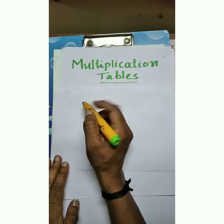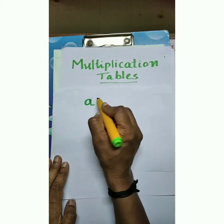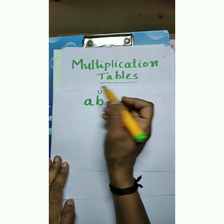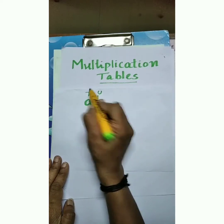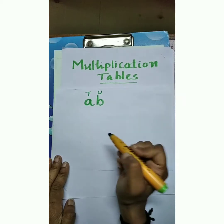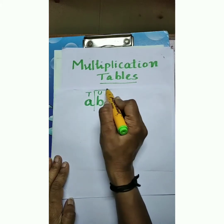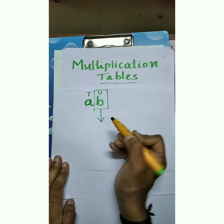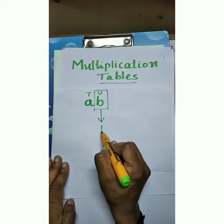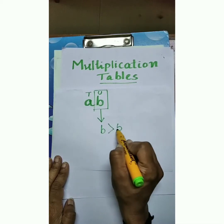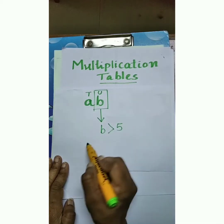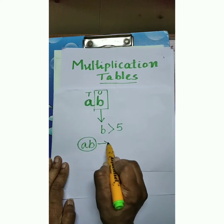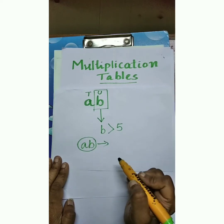Suppose the number is AB, where B is the unit place digit and A is the tens place digit. Observe this unit place digit — if the unit place digit is greater than 5, then convert this number to vinculum form.